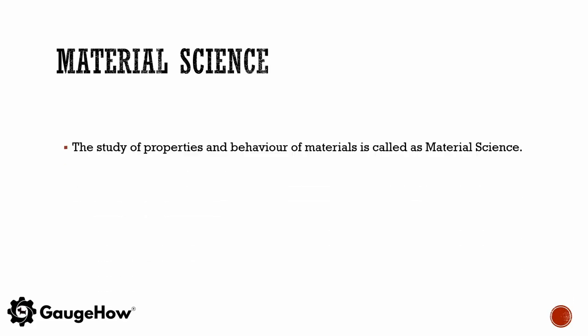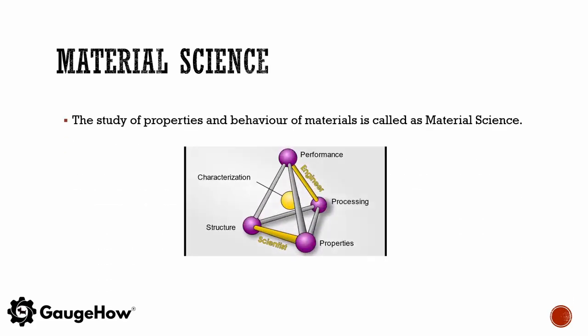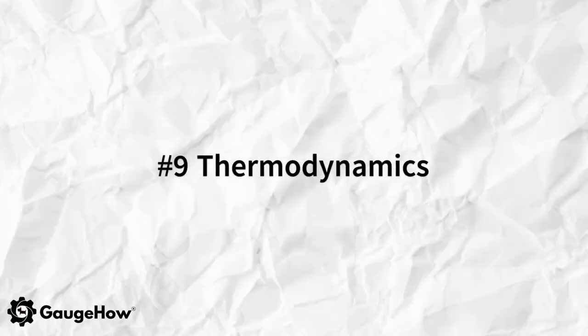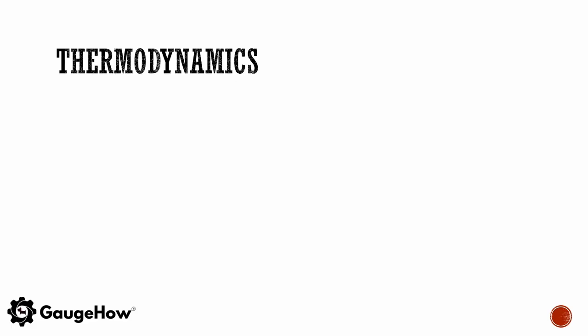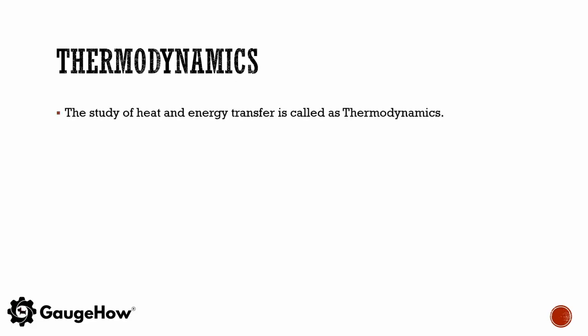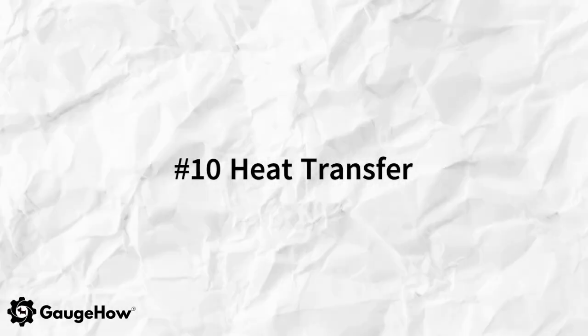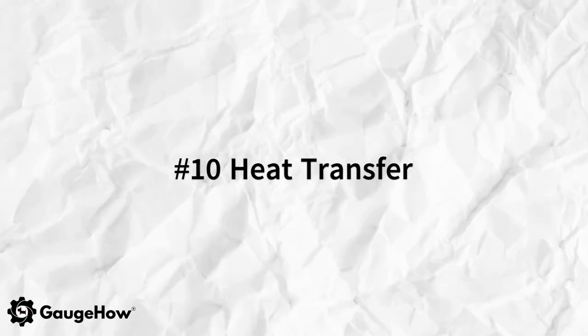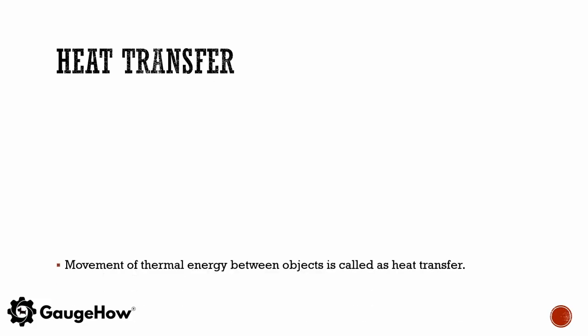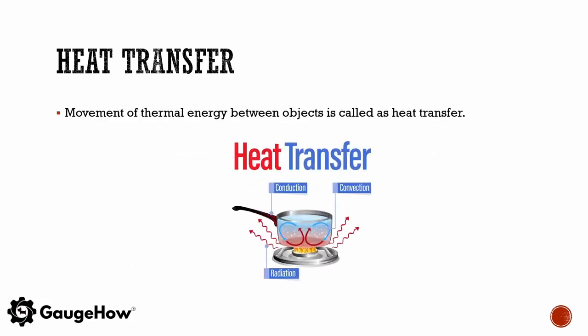Material science is the study of properties and behavior of materials. Thermodynamics is the study of heat and energy transfer. The movement of thermal energy between objects is called heat transfer.